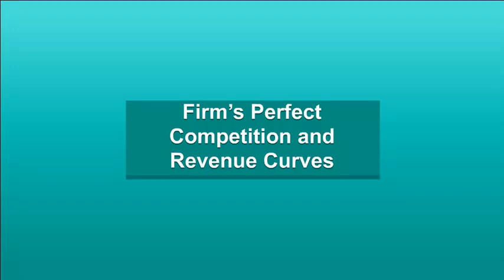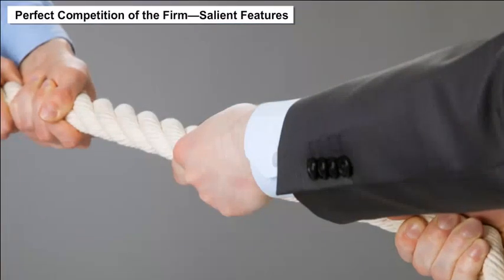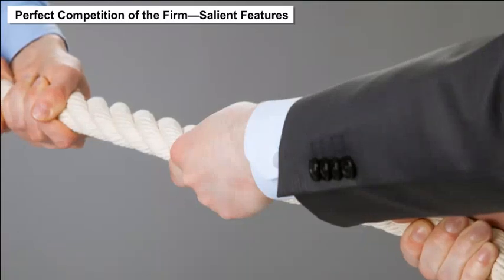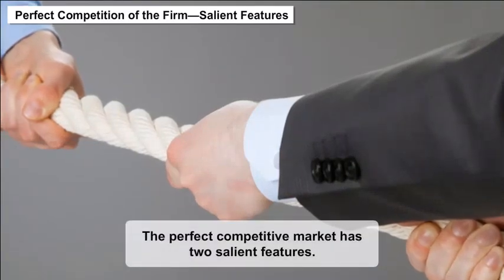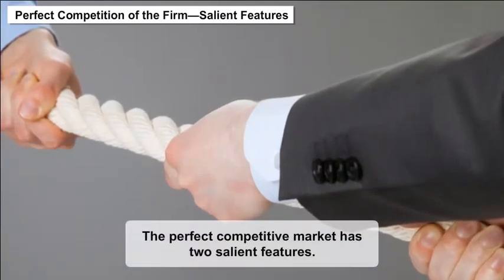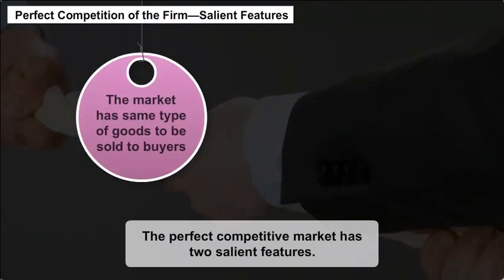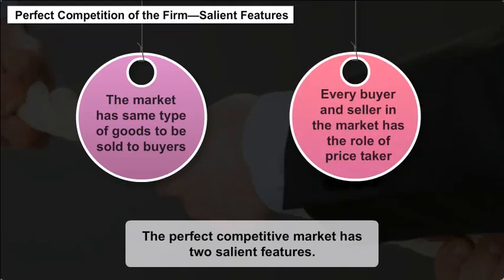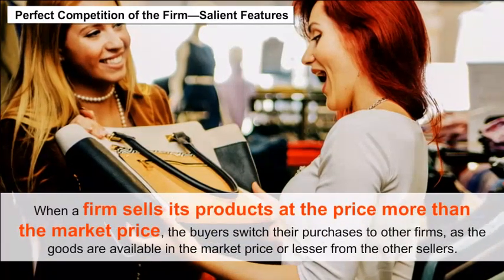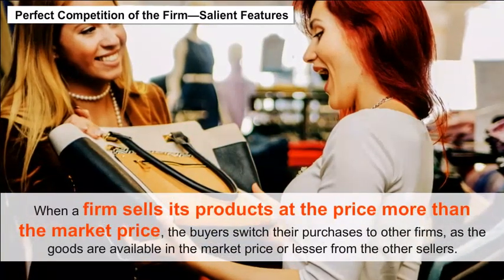Firms' Perfect Competition and Revenue Curves. The perfect competitive market has two salient features. First, the market has the same type of goods to be sold to buyers. And second, every buyer and seller in the market has the role of price-taker.